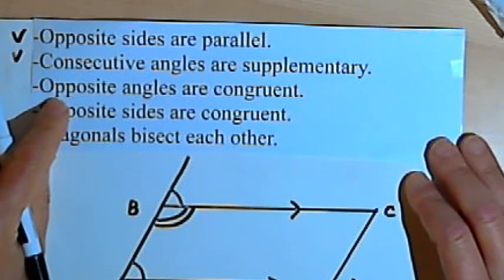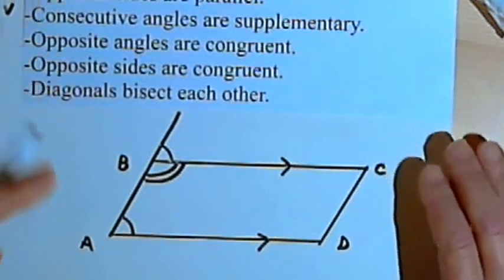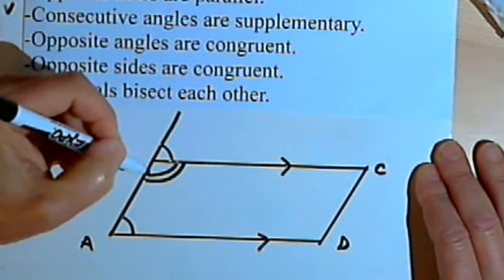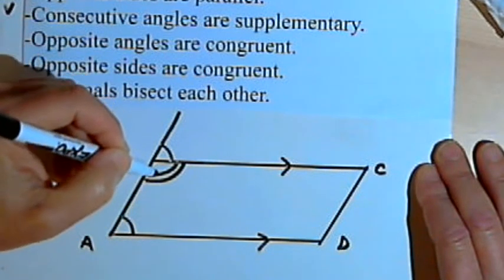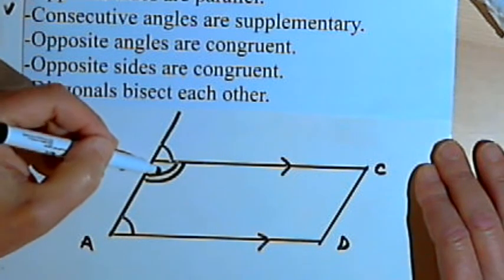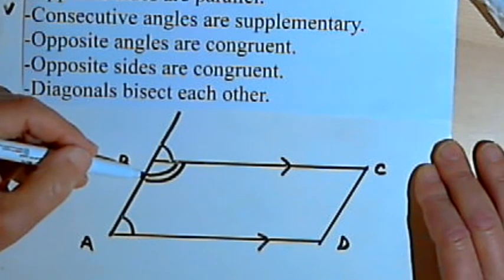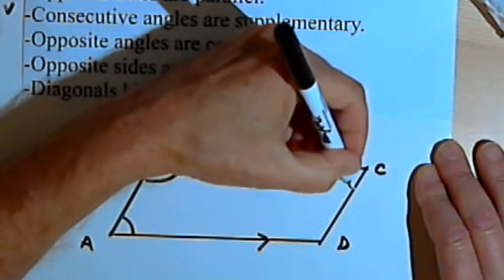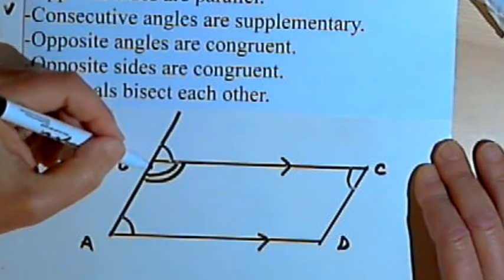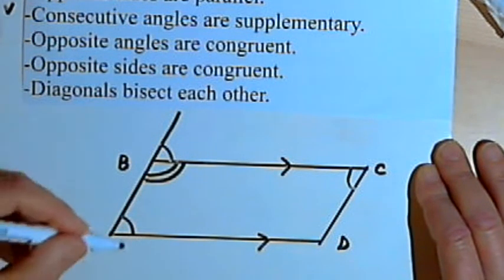The next property says the opposite angles of a parallelogram are congruent. Given what we know so far, that's going to be easy to show. Angle A and angle B are supplementary because they're consecutive angles. Angle B and C must also be supplementary because they're consecutive angles. But if angle A and B are supplementary and angle C and B are supplementary, then angle A must equal angle C — and those are opposite angles, so they're congruent.